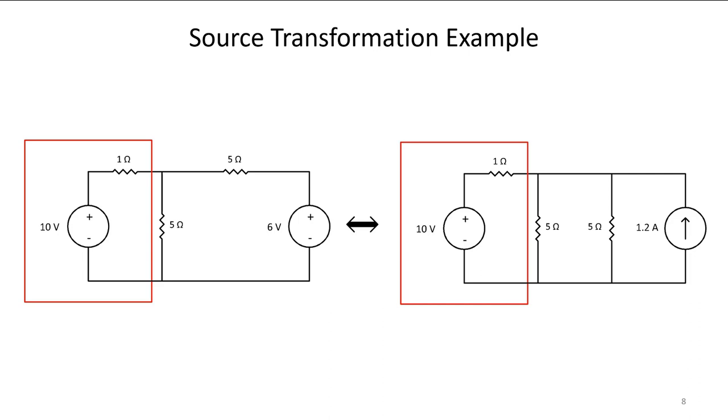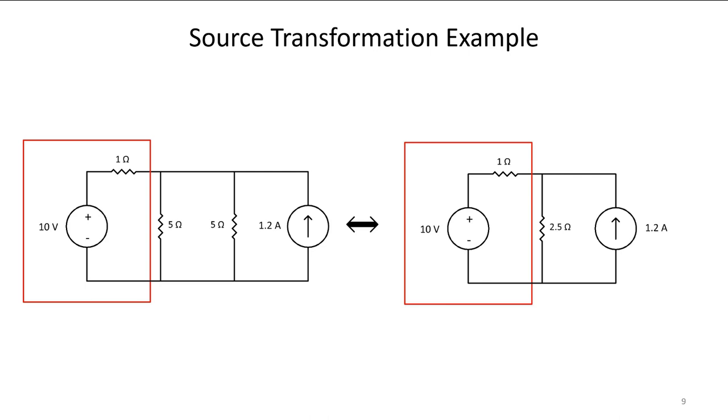Now we have two five ohm resistors in parallel across the same bus, so we can combine them. Five and five in parallel makes two and a half ohms. I'm going to combine the two fives and get a two and a half there.